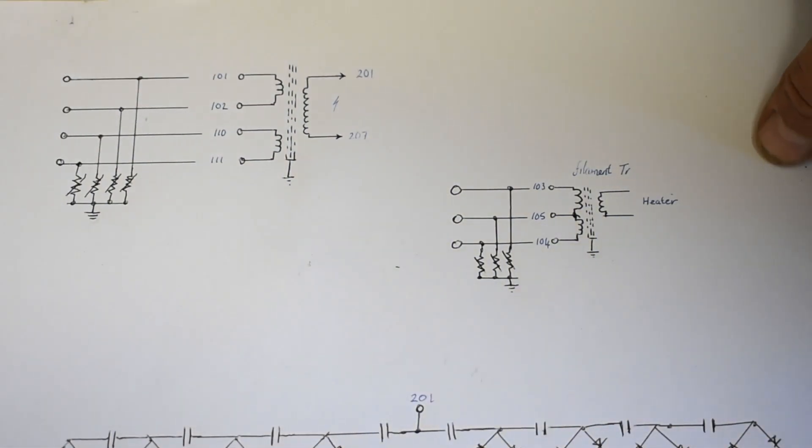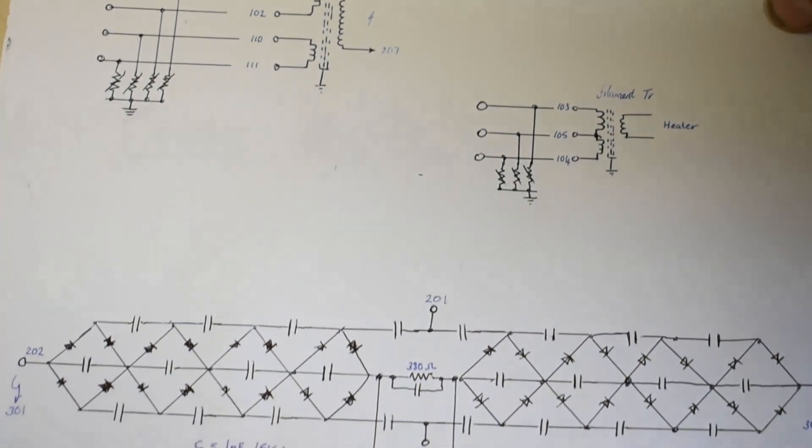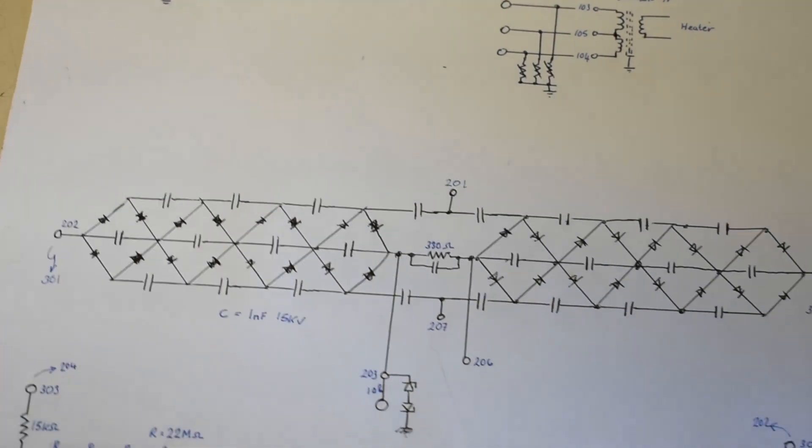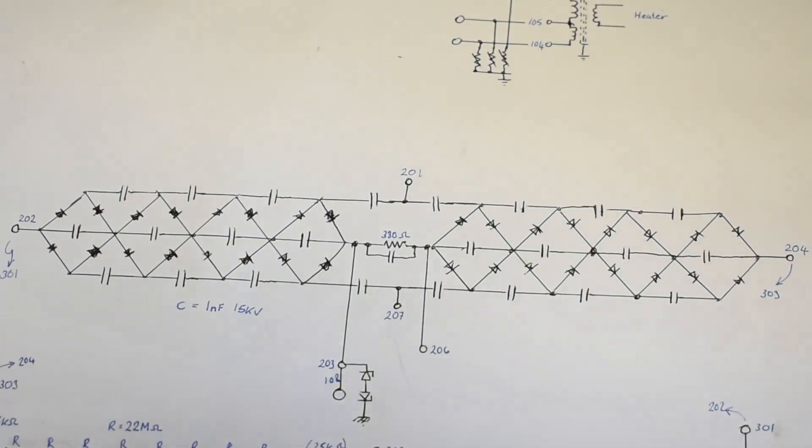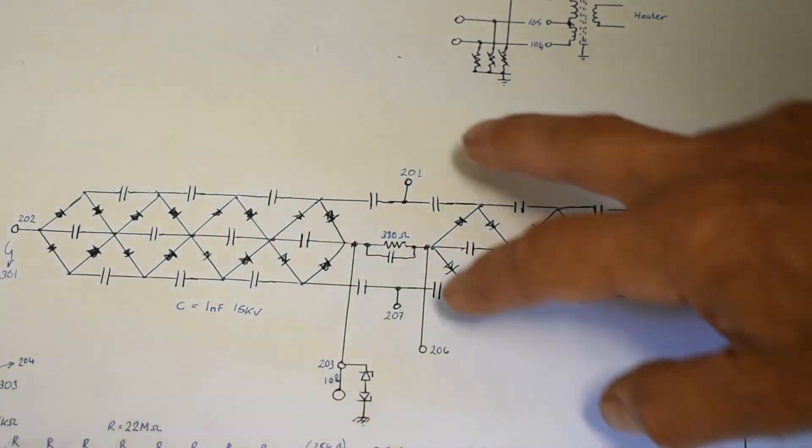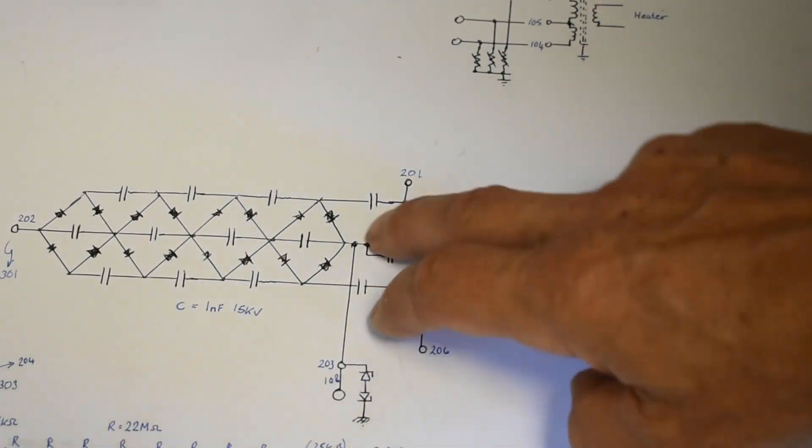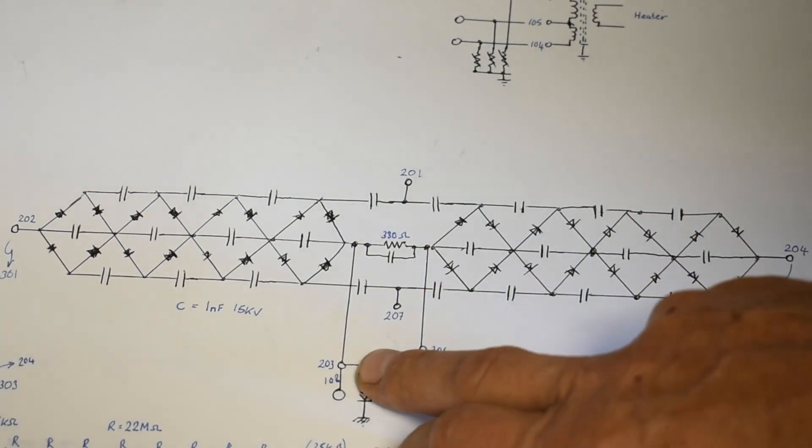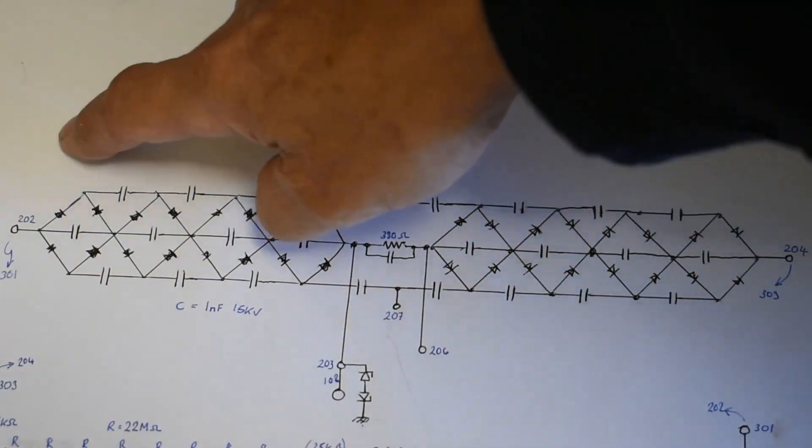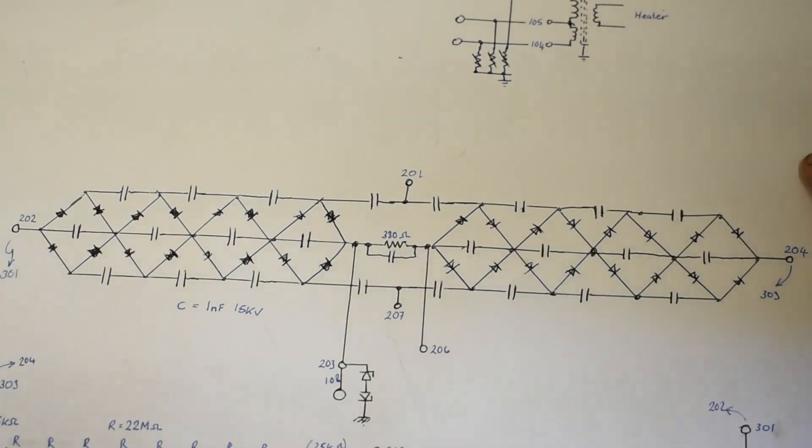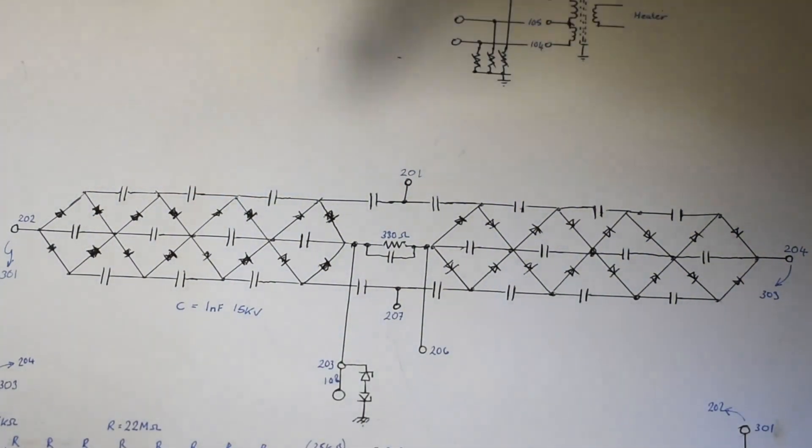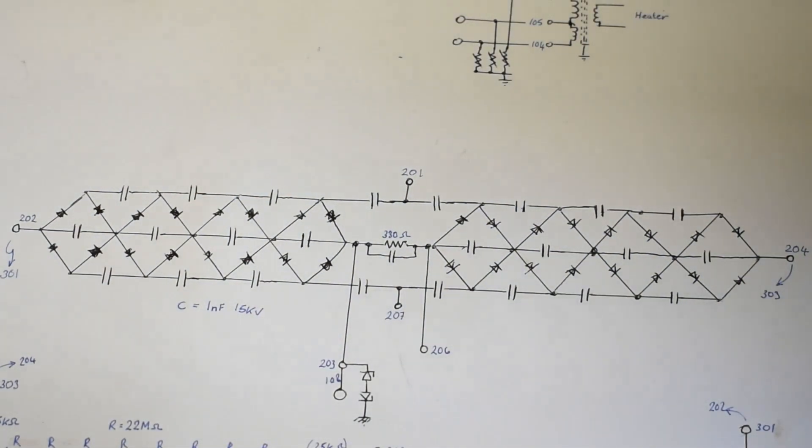The interesting thing is the Cockcroft-Walton multiplier board. This has the inputs from the high voltage transformer on here. This is the reference point to ground, which gives us a negative high voltage and a positive high voltage to give the full sum across the whole multiplier.